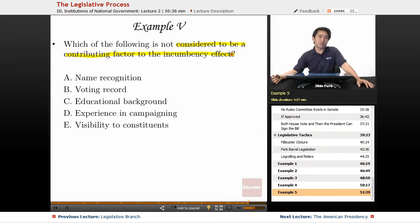The incumbency effect is much more prominent with House members. The reelection rate is roughly 90%, whereas the reelection rate for senators is closer to 70%. So what is not a contributing factor?